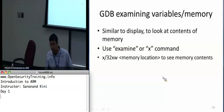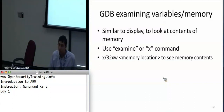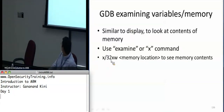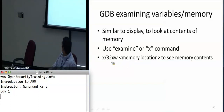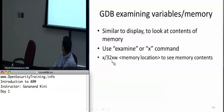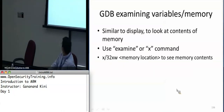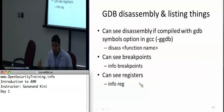To display or look at memory contents you use the 'x' or examine command. The examine command takes a format string. For example, if you want to look at a particular memory location and see 32 words in hex, you use '32xw' — that means look at 32 items, print the values in hexadecimal, and print them a word at a time. I'll show more examples of this in a little bit.